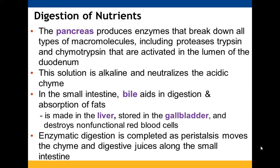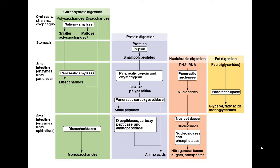Digestion continues in the small intestine as peristalsis moves things along. Carbohydrates are broken down in the oral cavity and in the small intestine, from both enzymes within the small intestine and from the pancreas. Proteins are digested in the stomach, and then enzymes from both the pancreas and the small intestine's epithelium help break down proteins further. Nucleic acids are not broken down until they reach the small intestine, where enzymes from both places help. Fats are only broken down via enzymes from the pancreas.